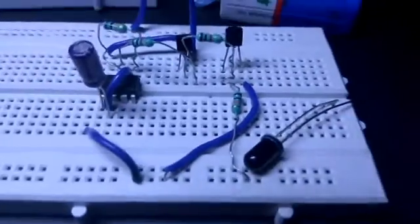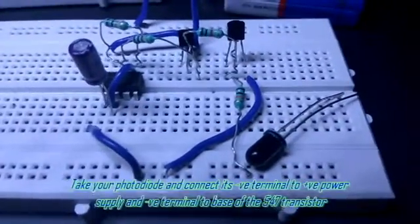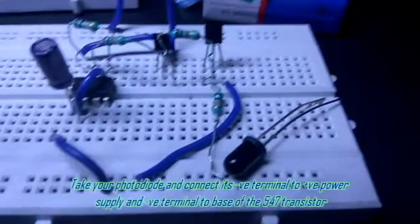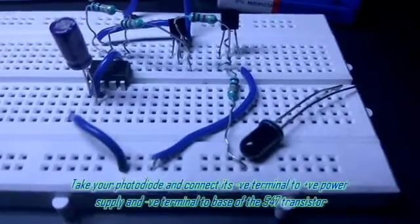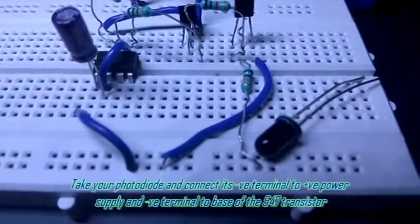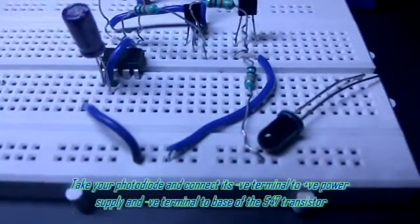Now take your photodiode and connect its negative terminal to positive power supply and positive terminal to base of the 547 transistor.